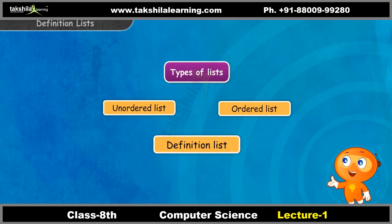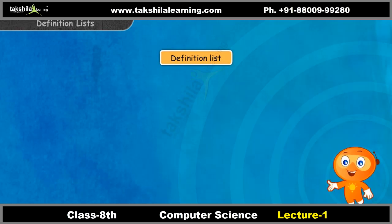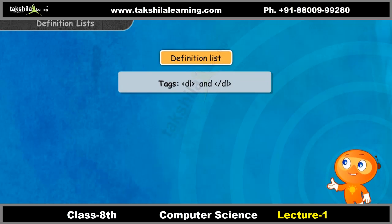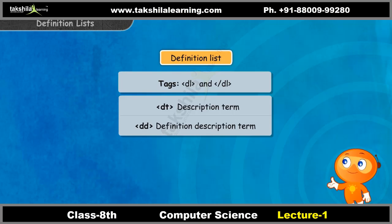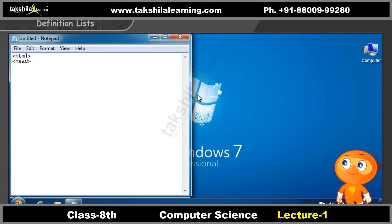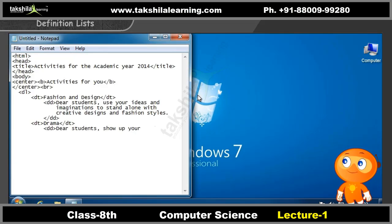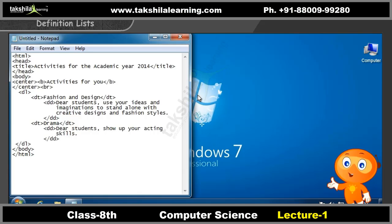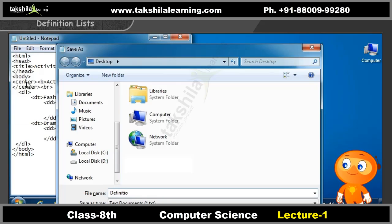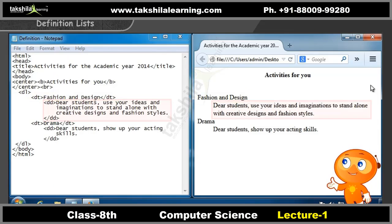We will now look at the third type of list, the definition list. Definition lists are lists where you can give the description of each item. You can use the DL tags for defining a definition list. For defining definition lists, we use the DT and DD tags shown on screen, which stand for definition list term and definition description term respectively. We will see how to execute the definition list. The output will be as shown on screen.